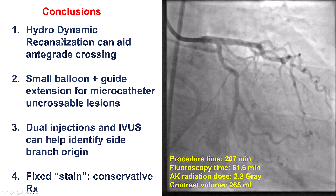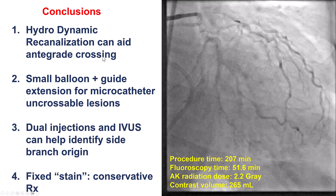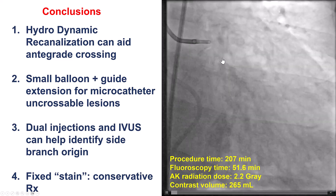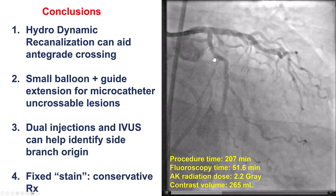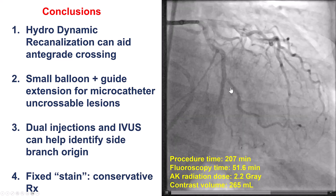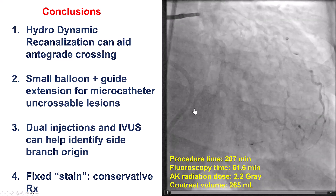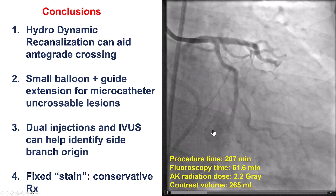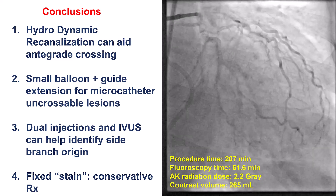Several conclusions from this case. First, application of HDR — hydrodynamic contrast recanalization — can be helpful for crossing CTOs, in this case in-stent CTOs. When you have difficulty advancing a balloon or microcatheter, using a guide extension and a small balloon — the Takeru in this case — was successful for allowing equipment delivery more distally. We used dual injection and IVUS to find the origin of the first obtuse marginal branch. When we tried wiring and HDR more distally, we had a fixed contrast stain, which we decided to leave alone. The patient did not develop tamponade and did fine. When there is a contained stain — essentially a contained dissection or perforation — leaving it alone is acceptable and does not necessarily require coiling or other aggressive treatment.